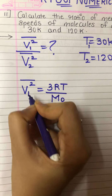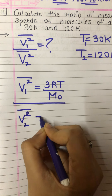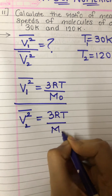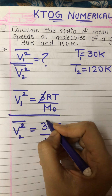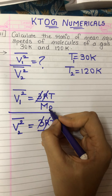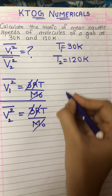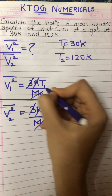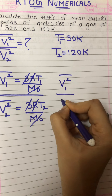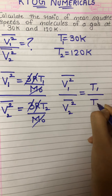The formula for mean square speed is 3RT upon M₀. Let's put V1 here, and mean square speed for the second gas will also be 3RT upon M₀. Now, 3 is constant so it gets cancelled. R is universal gas constant, it gets cancelled. M₀ is the molar mass of the gas — since the gas is the same, M₀ also gets cancelled. What remains is T1 upon T2.